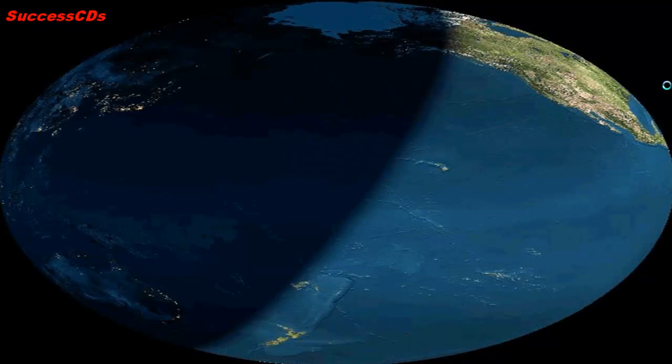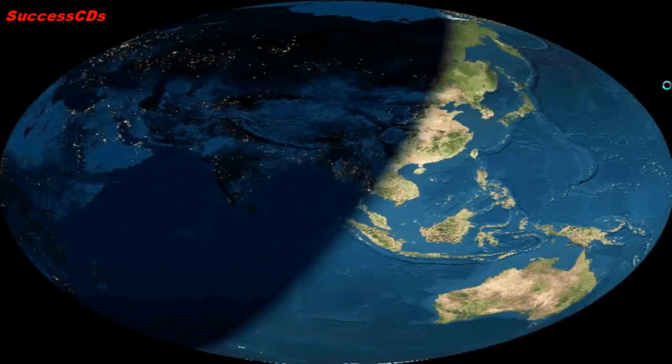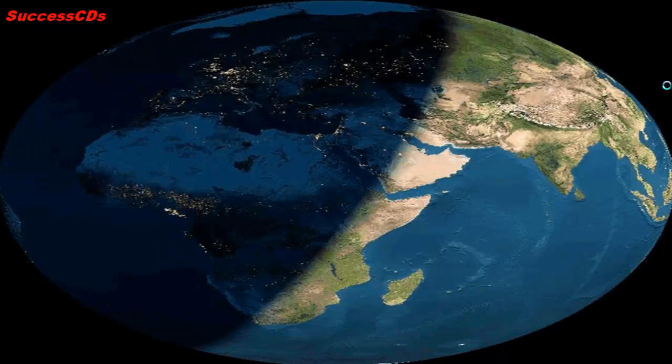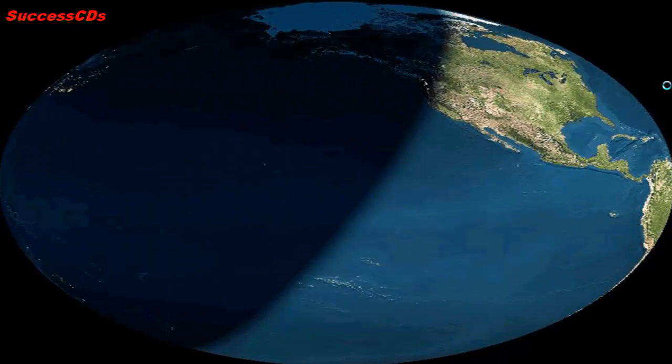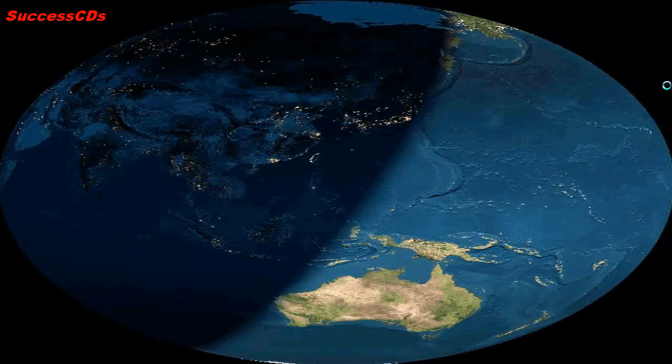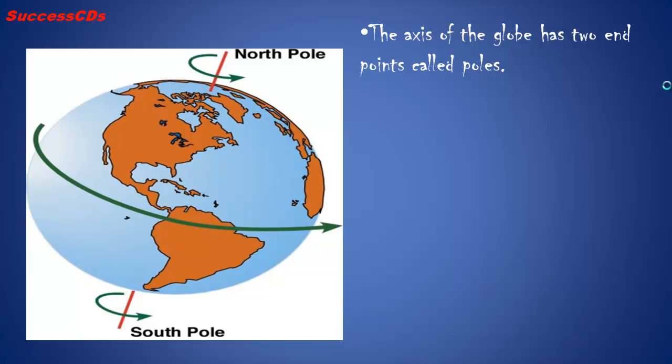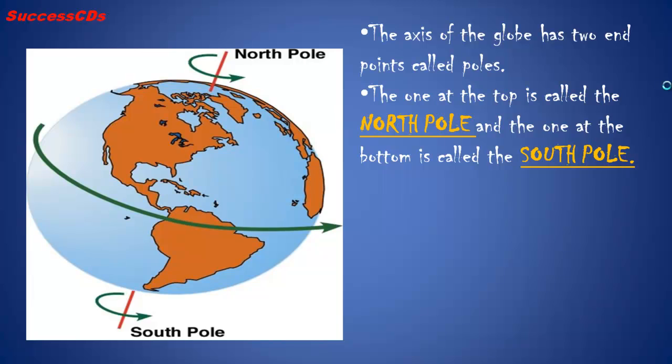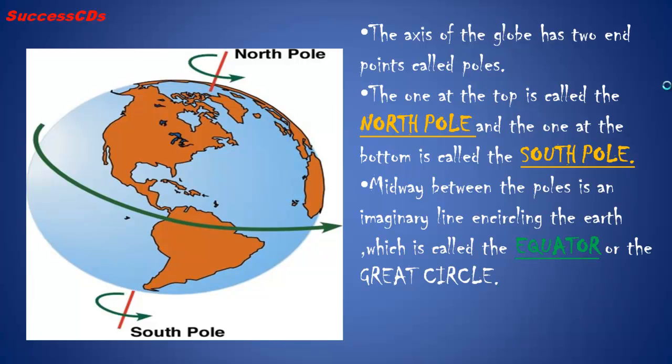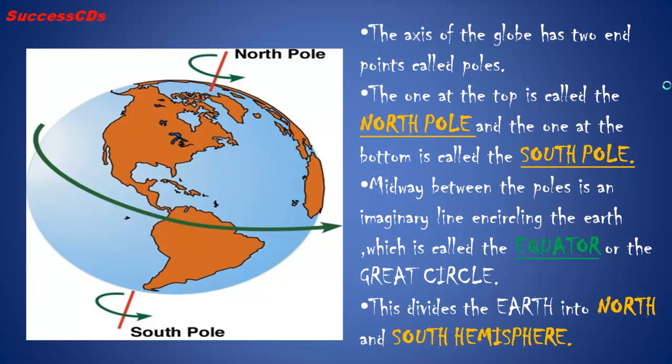Like the Earth, as the globe is spherical, we can see only one half of it. A globe is not fixed but can be rotated just like the Earth. The axis of the globe has two points called poles. The one at the top is called the North Pole and the one at the bottom is called the South Pole. Midway within the poles is an imaginary line encircling the Earth which is called the equator or the Great Circle. This divides the Earth into North and South Hemisphere.